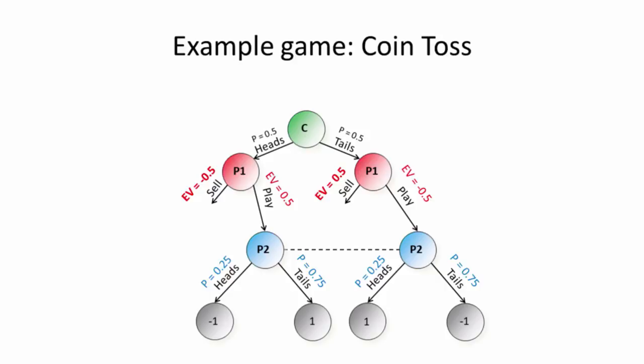But now let's say we change this game a little bit. Let's say we swap the payouts for the sell action. So that player one gets minus 0.5 for choosing sell when the coin lands heads, and plus 0.5 for choosing sell when the coin lands tails. Well, it's easy to see that in this case, the strategy for player two in the play sub game should actually change. We should be guessing heads with 75% probability, and tails with 25% probability. But you can see what happened here, is that by changing the expected value for the sell sub game, we have affected what the optimal strategy is in the play sub game. Even though the sell action is not in the play sub game, and in fact, it's not even on the path to the play sub game.